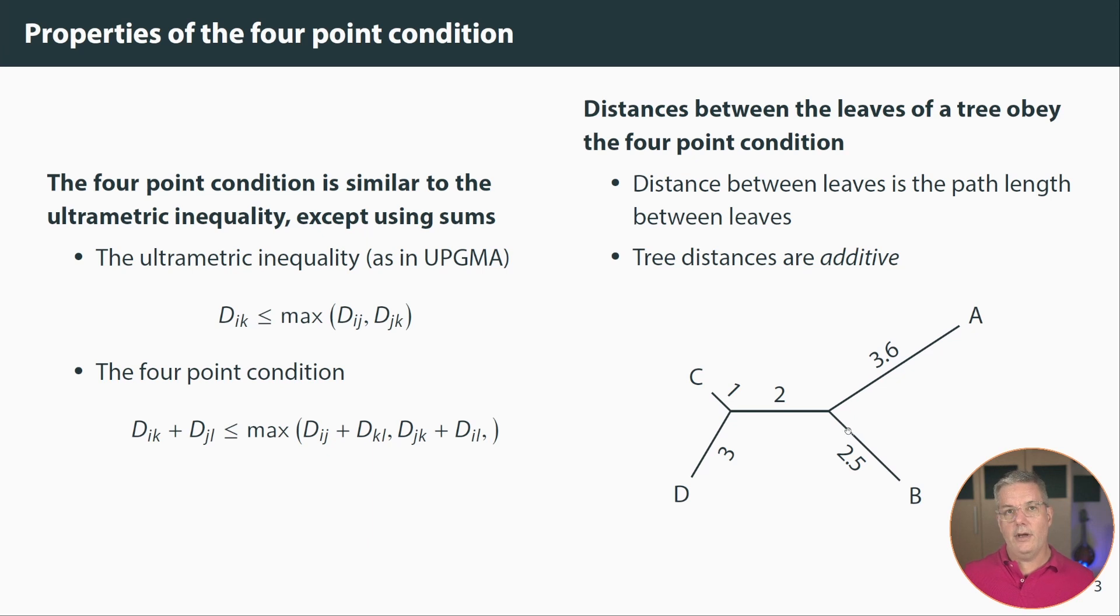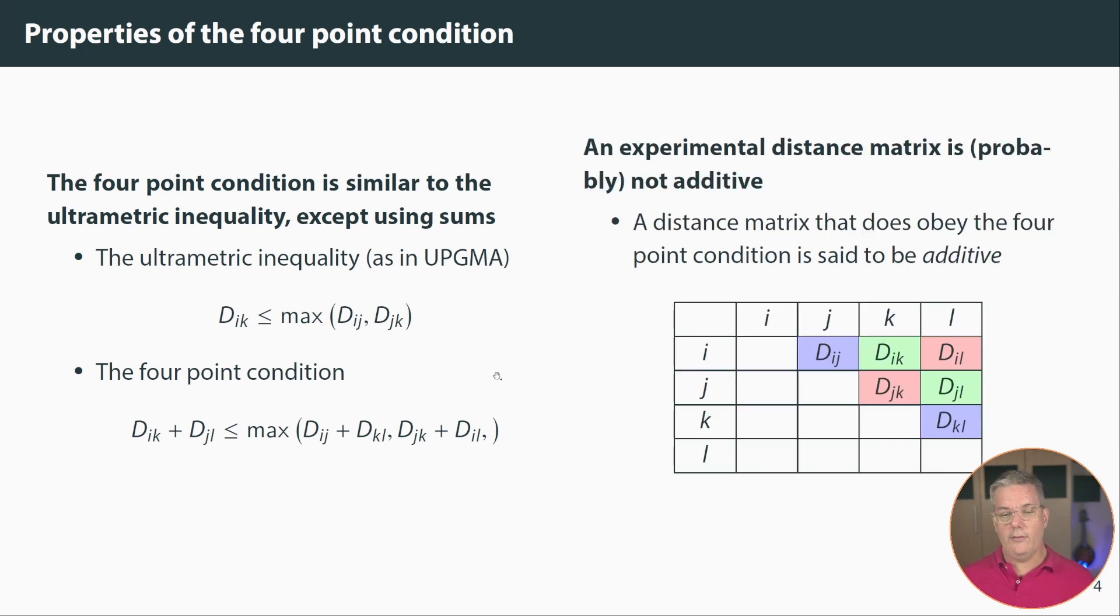Now if you remember an interpretation or an interpretive consequence of the ultrametric inequality, if this is the case it turns out that the max, that two of these distances will be the same in the ultrametric inequality. The two larger distances will be the same in an ultrametric inequality. And the consequence for the four-point condition if we know that to be true of individual distances in the four-point condition it's the sums that two of them have to be the same.